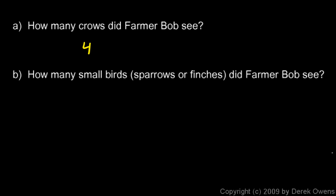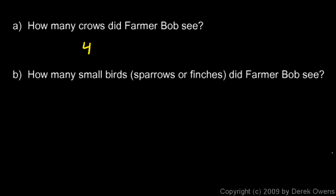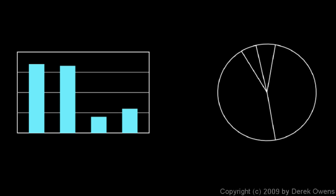The second question asks: how many small birds — sparrows or finches — did farmer Bob see? Sparrows is 17. The finches bar is 2 above the 10 line, so that's 12. To find the total small birds, we add: 17 sparrows plus 12 finches equals 29 birds total.